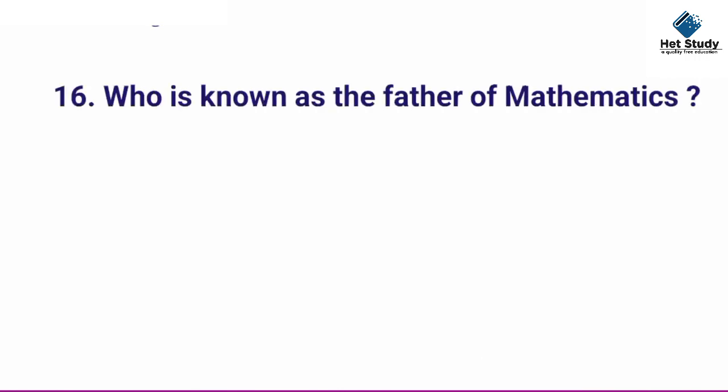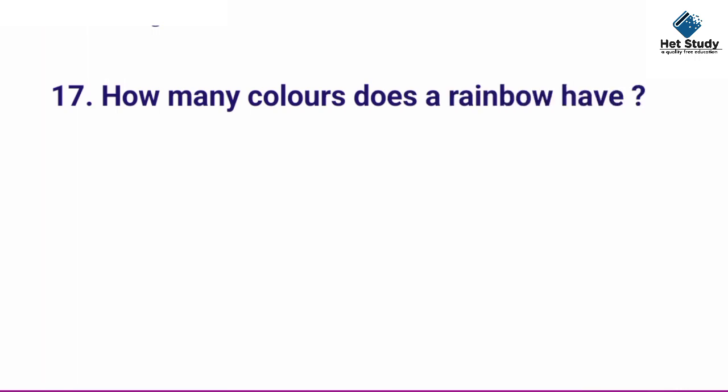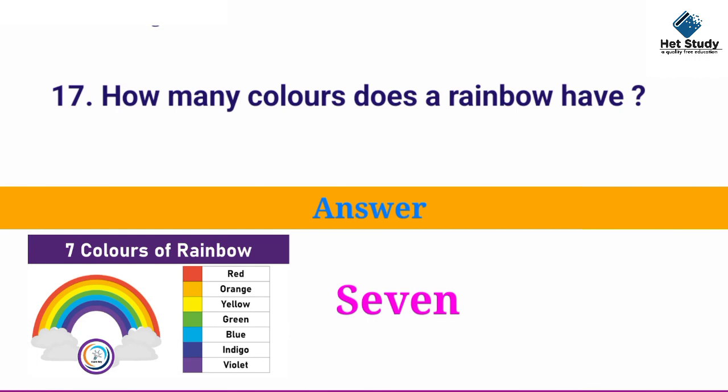Who is the father of mathematics? Answer: Archimedes. How many colors does a rainbow have? Answer: seven.